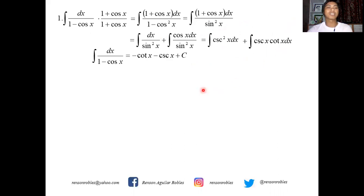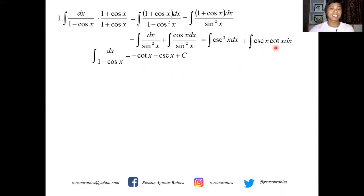The integral of cosecant squared x gives negative cotangent x, and the integral of cosecant x cotangent x gives negative cosecant x. So the final result is negative cotangent x minus cosecant x plus C.